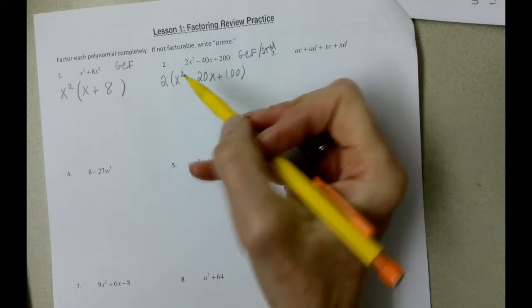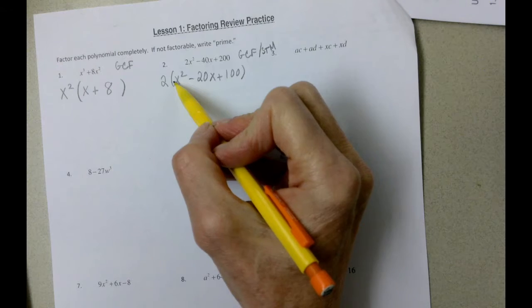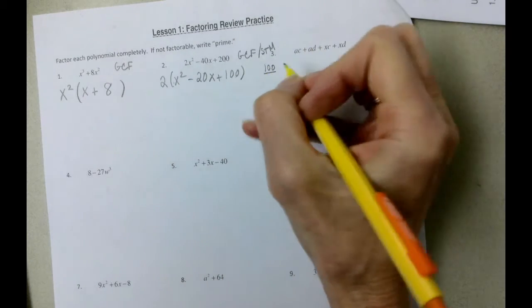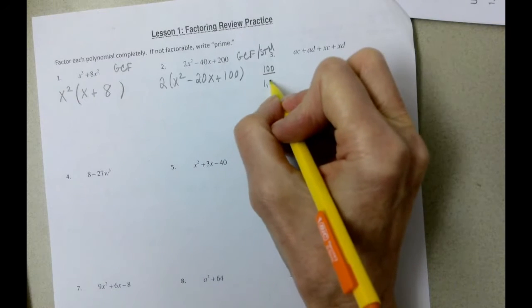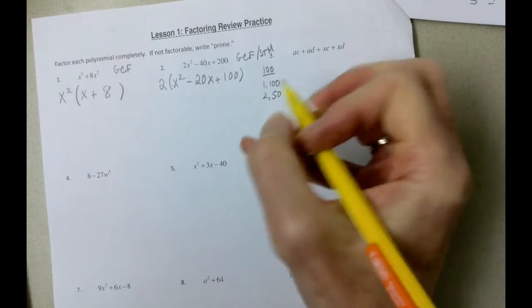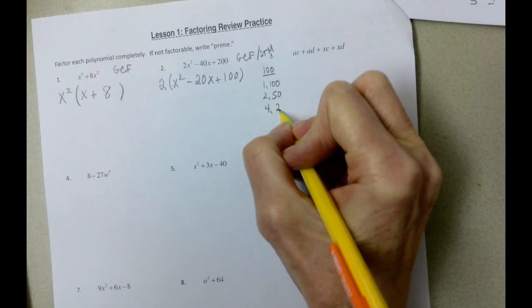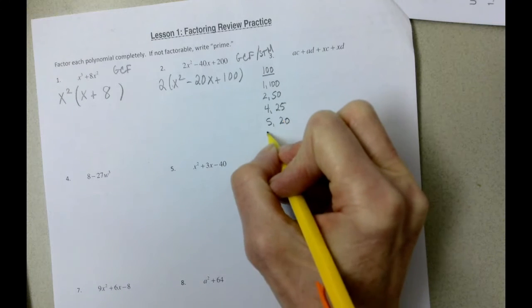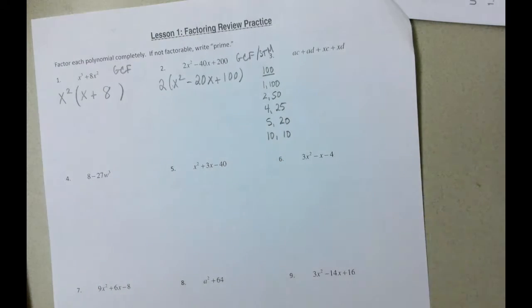And when we split the middle, it's going to be the number in front of the x squared, which is one, times one hundred. So one times one hundred is a hundred. And the factors of a hundred are one and one hundred, two and fifty, four and twenty-five, five and twenty, and ten and ten.